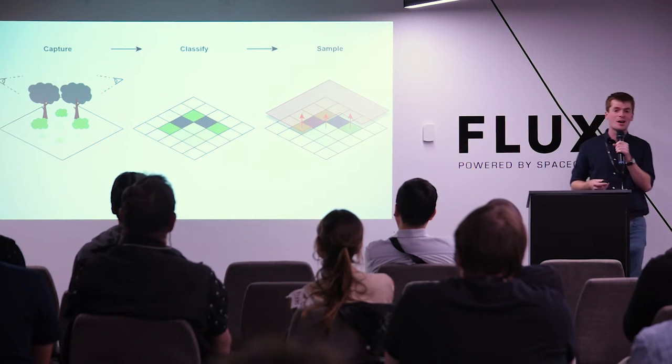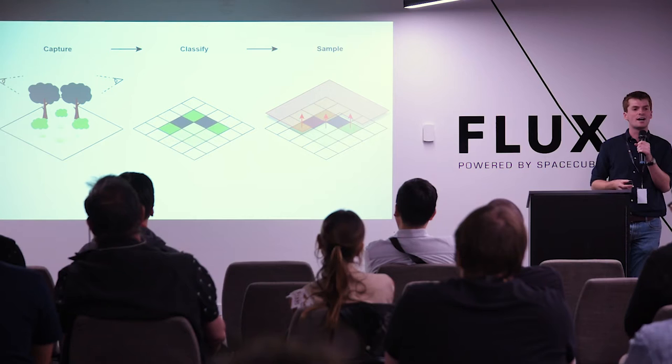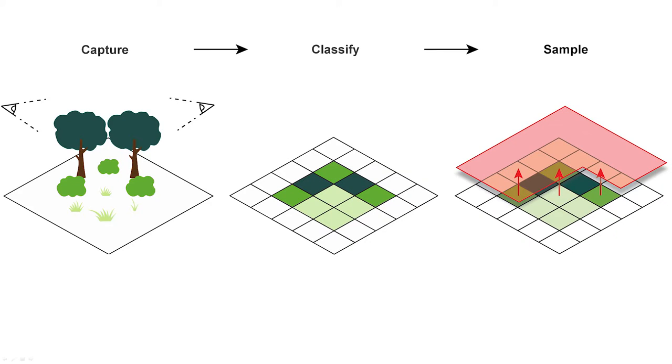To answer these questions, we sourced data from the CSIRO Urban Monitor dataset. This is a raster data product that covers the spatial extent of Perth, Melbourne, and Sydney and identifies the presence of vegetation. What's unique about Urban Monitor is that it's captured by aerial photography from multiple angles, which allows us to compute a height property and classify identified vegetation into categories such as tree, shrub, and grass.